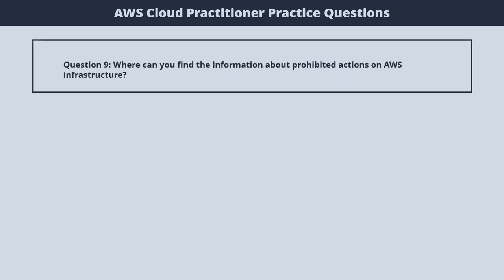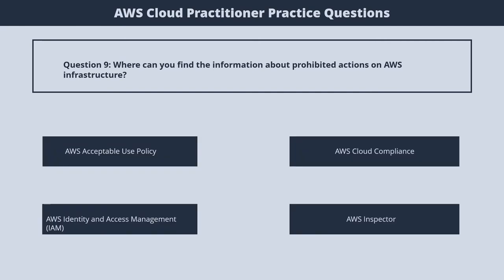Question 9. Where can you find the information about prohibited actions on AWS Infrastructure? 1. AWS Acceptable Use Policy. 2. AWS Cloud Compliance. 3. AWS Identity and Access Management. 4. AWS Inspector. The correct answer is 1. AWS Acceptable Use Policy.